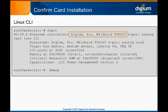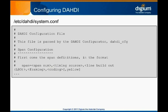We can also use the dmesg Linux utility to verify that the system properly detected the card. Before we configure the Dottie channel driver in Asterisk, we must first configure the Dottie hardware device drivers. We do this by editing the configuration file system.conf in the etc.dottie directory. This file contains lots of information covering configuration options and examples, present in comments denoted by the hash sign.